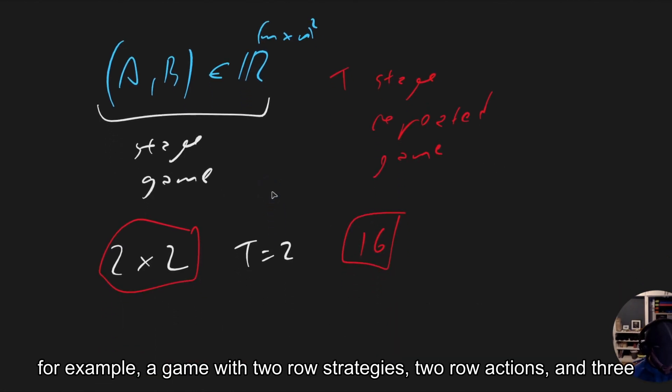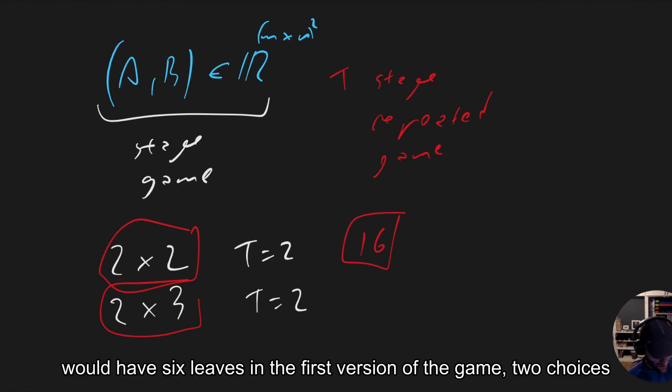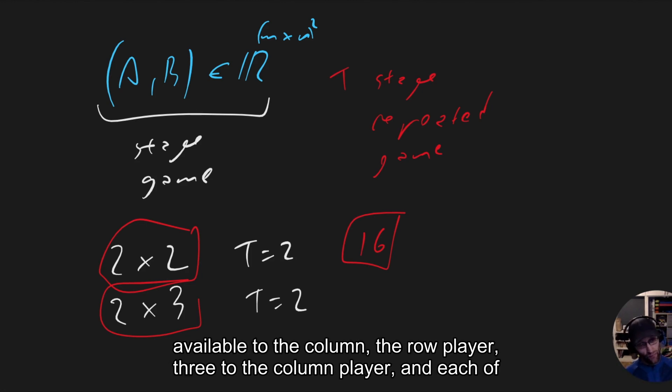If we had, for example, a game with two row strategies, two row actions, and three column actions, so a two-by-three game, again with T equals two, then here we would have six leaves in the first version of the game. Two choices available to the row player, three to the column player.